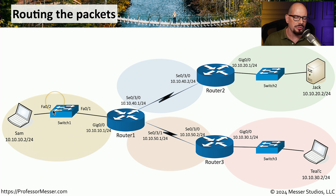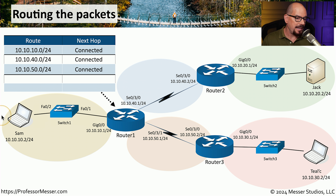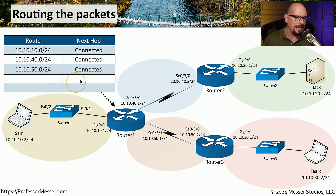Those three subnets are directly connected to router 1. So if we were to look at the routing table for router 1, it would see the route for 10.10.10.0/24, 10.10.40.0/24, and 10.10.50.0/24. All of those networks are locally connected to this router. The problem occurs if Sam would like to communicate to Jack. Although router 1 knows about the local networks, it has no idea that there are more networks on the other side of router 2 and of router 3. And those particular networks of 10.10.20.0/24 and 10.10.30.0/24 are nowhere in this routing table.